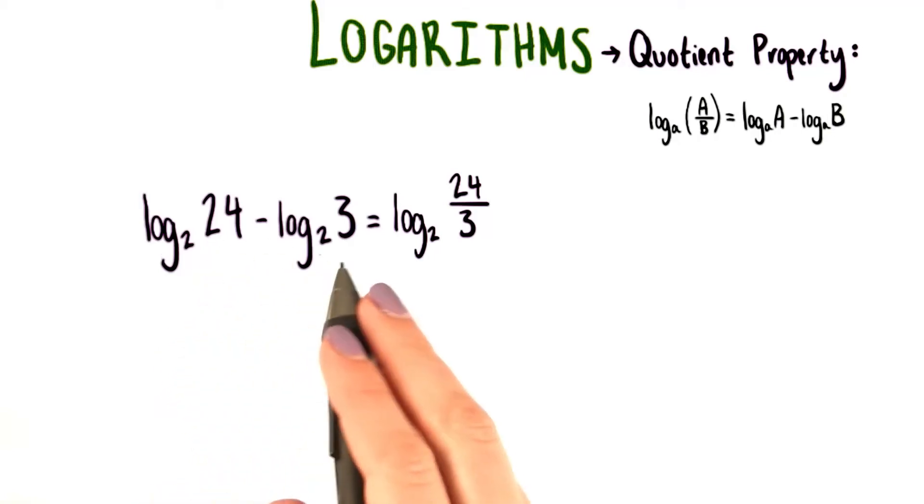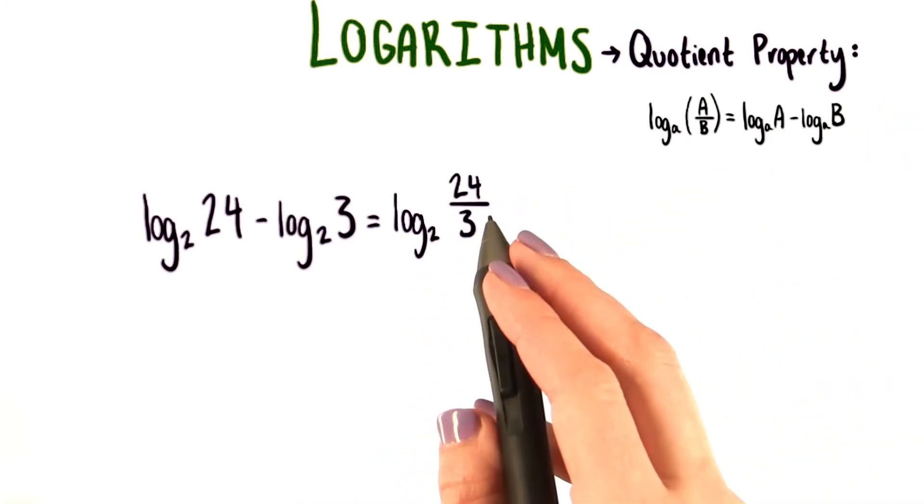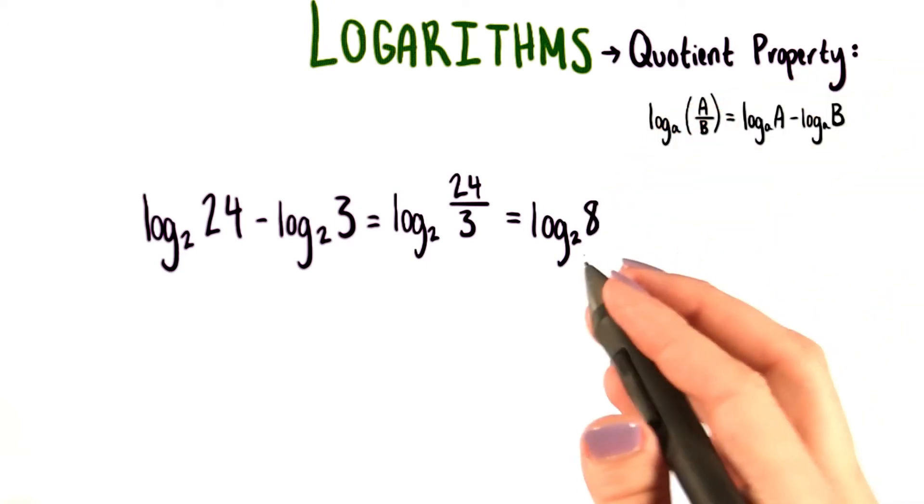Log base 2 of 24 minus log base 2 of 3 should, according to the quotient property, equal log base 2 of 24 over 3. And 24 over 3 is just 8. So this is log base 2 of 8.